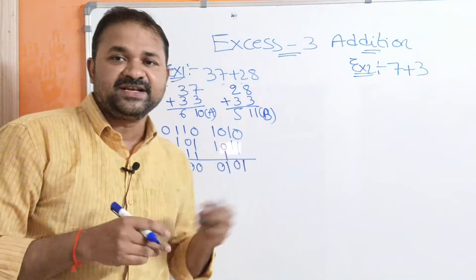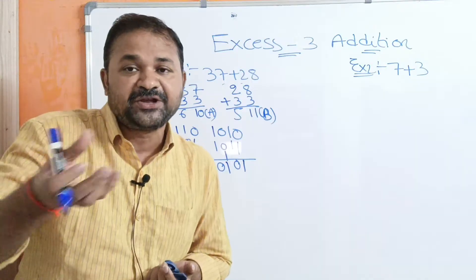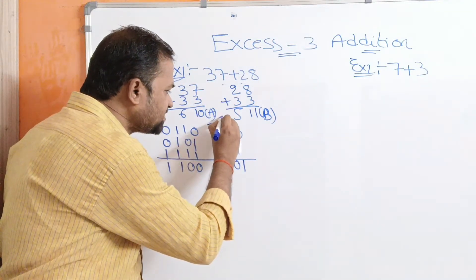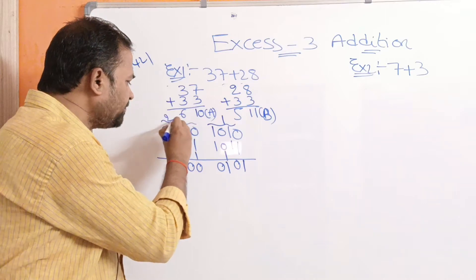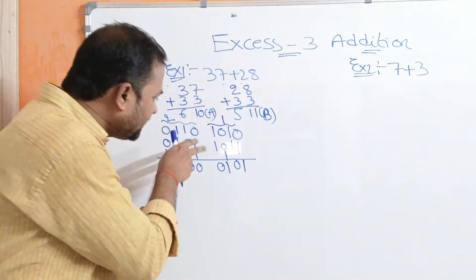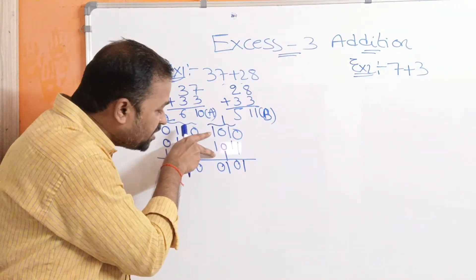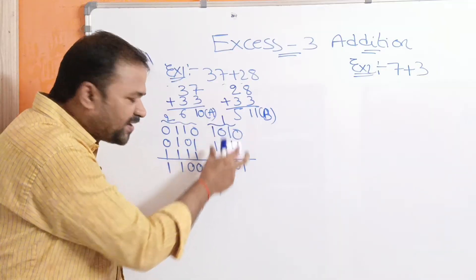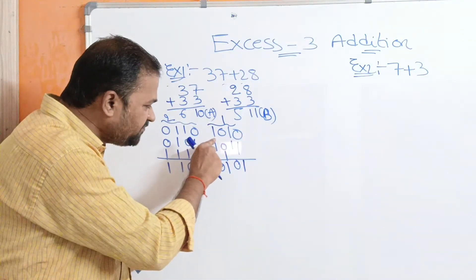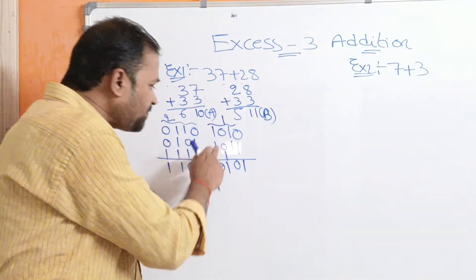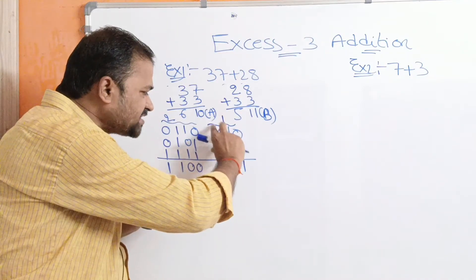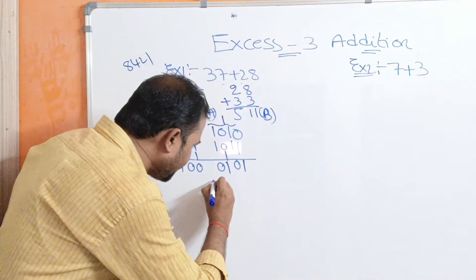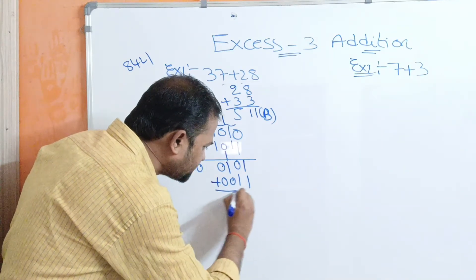After performing the addition, if we get a carry from a particular group, we have to add 3 to the corresponding sum. If we observe the first group of 4 bits, the most significant bits are both 1. 1 plus 1 gives 0 with carry 1. Since we got a carry by adding the most significant bits of the first group, we need to add 3 to the corresponding sum.